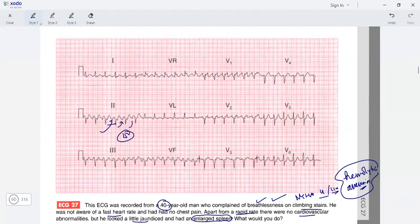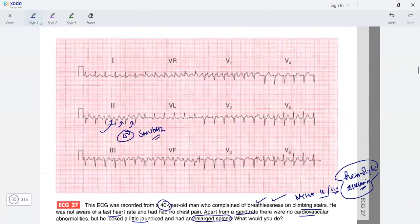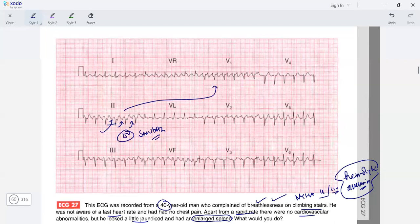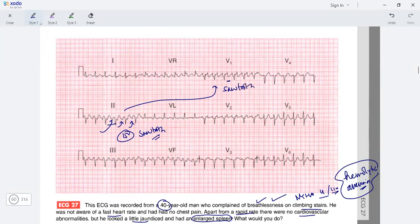Looking at V1, V1 has a classic sawtooth P wave. I got my diagnosis: this is atrial flutter. As the rate is around 150, this must be atrial flutter with 2:1 AV block. This is atrial flutter with 2:1 AV block.